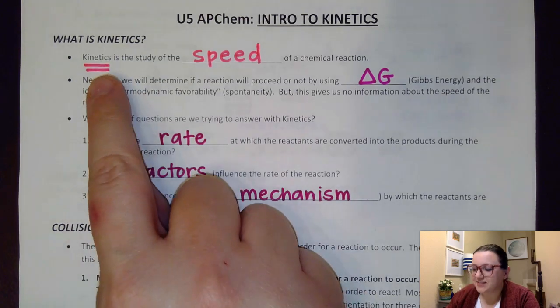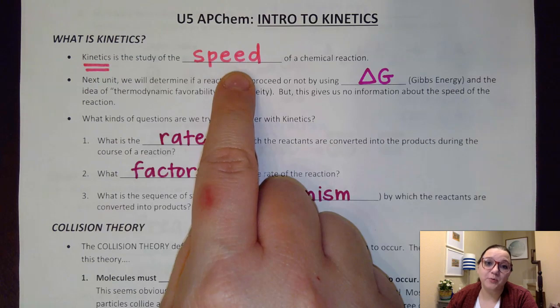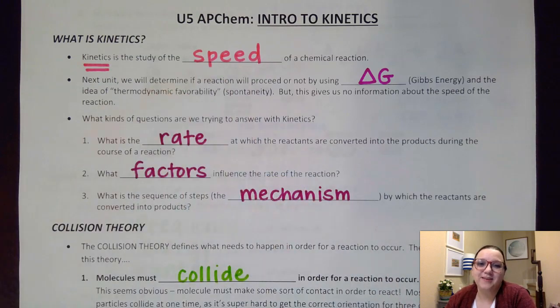Now kinetics is the study of the speed of a chemical reaction. Back in pre-AP chemistry we kind of assumed that all reactions take place and we never really talked about how quickly they're taking place. That's going to change now that we're in AP chemistry.